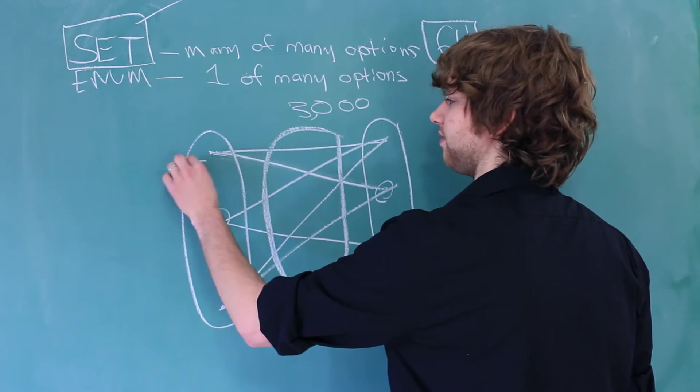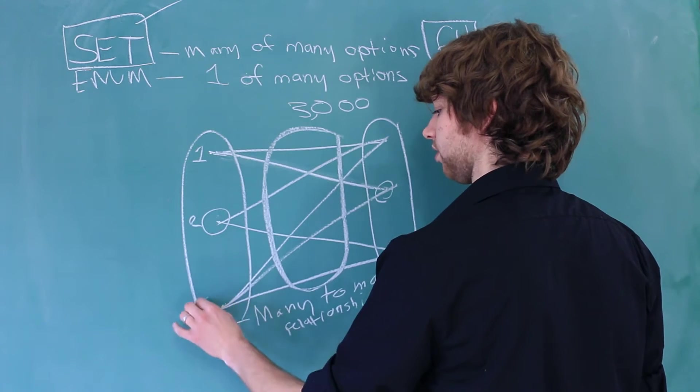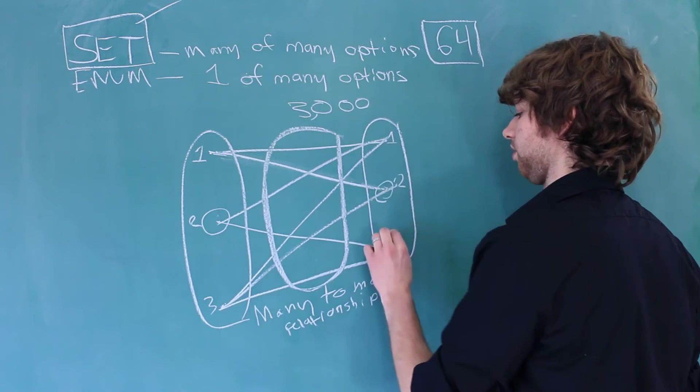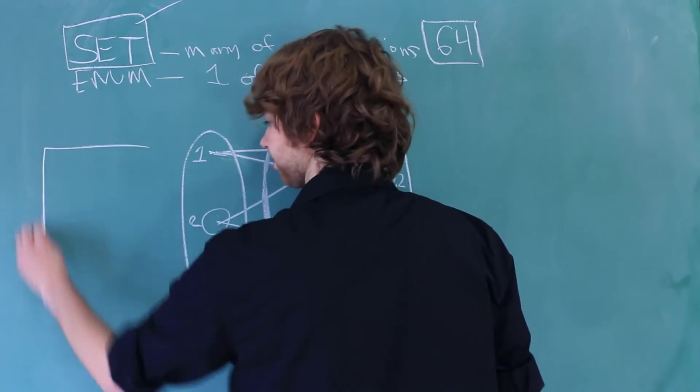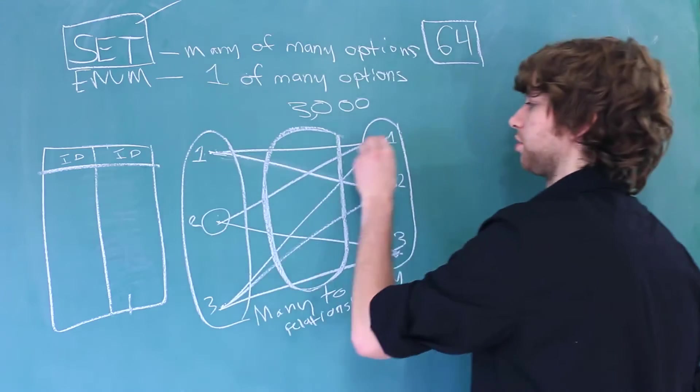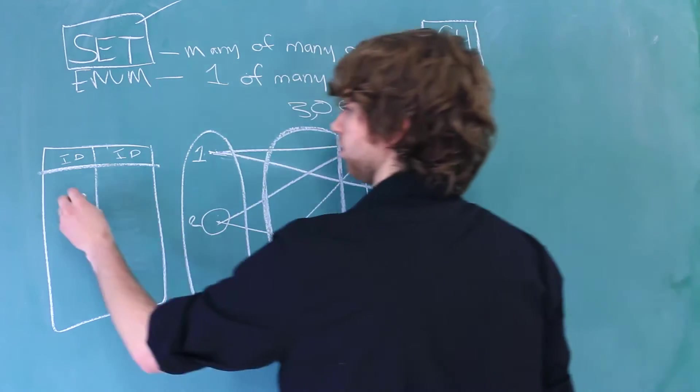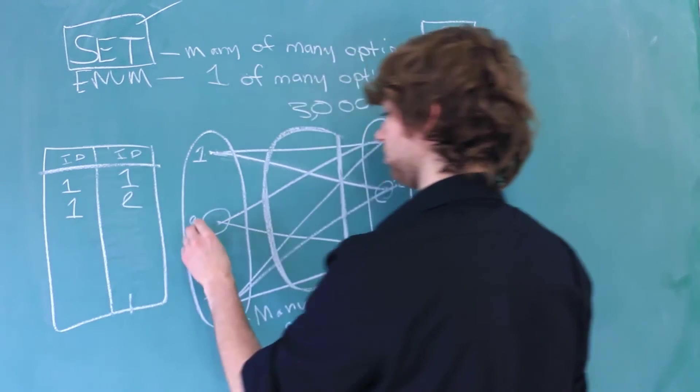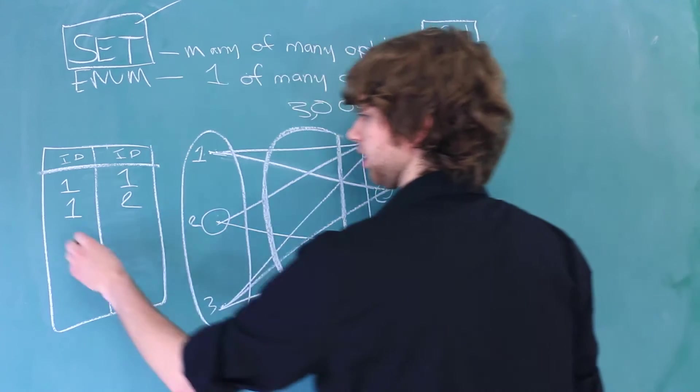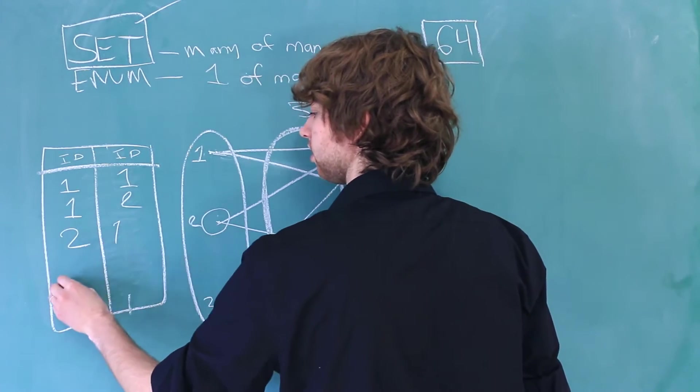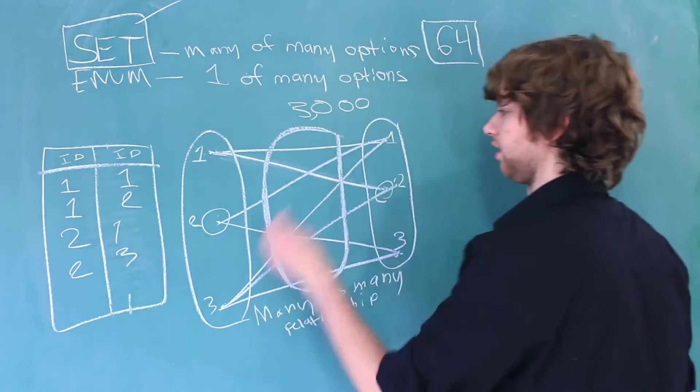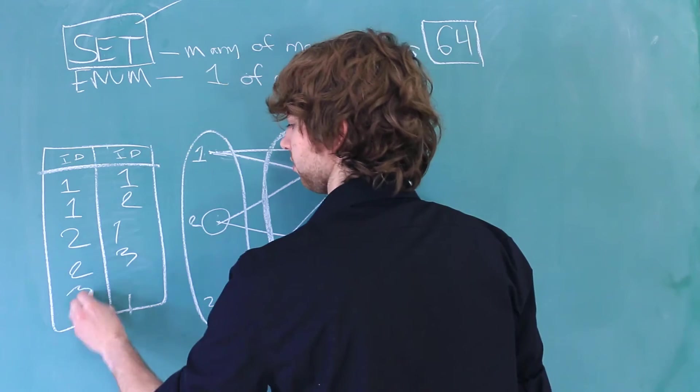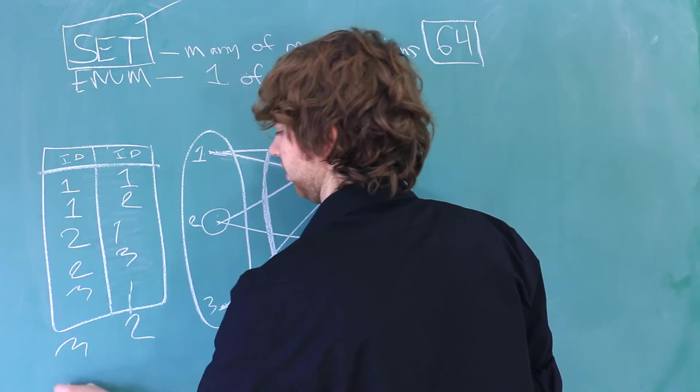So to go through an example, let's give these some IDs. One, two, three, one, two, three. Our intermediary table would look something like this. One goes to one, and one goes to two. So it would be like this: one one, one two. Two goes to one, and two goes to three. So we'd have two to one, two to three, and then finally three to one, two, and three. Three to one, three to two, and three to three.